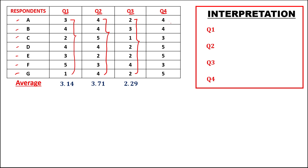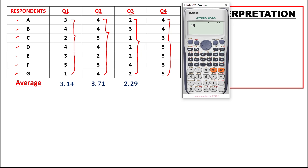Then for question number 4, to find the average, we have 4 + 4 + 3 + 5 + 5 + 3 + 5, then divide by 7, so the average is 4.14.